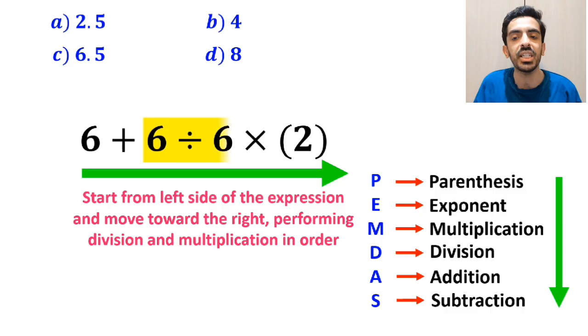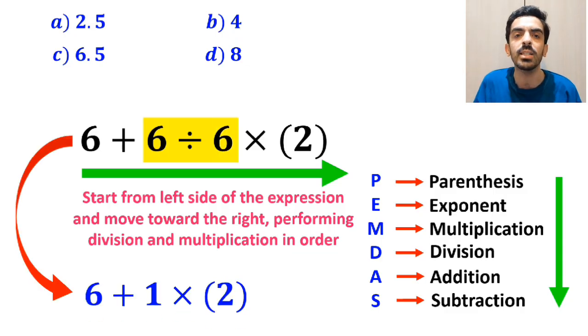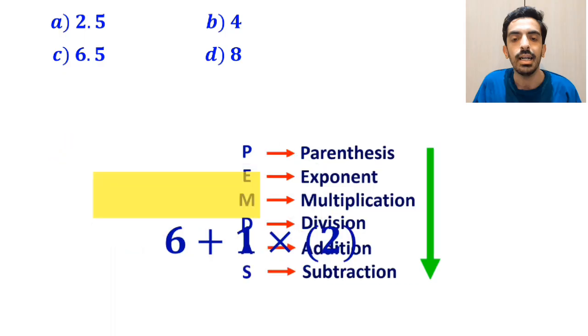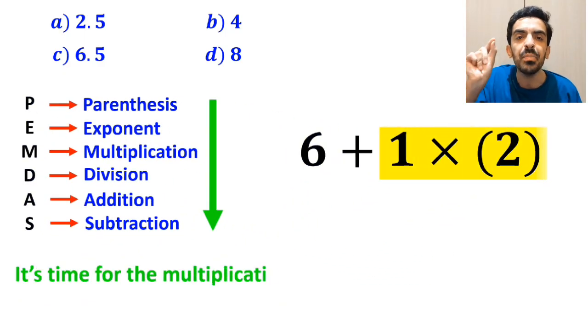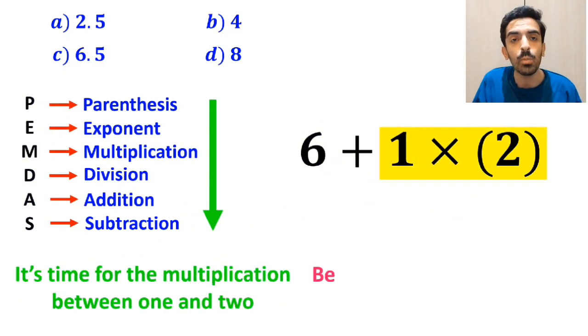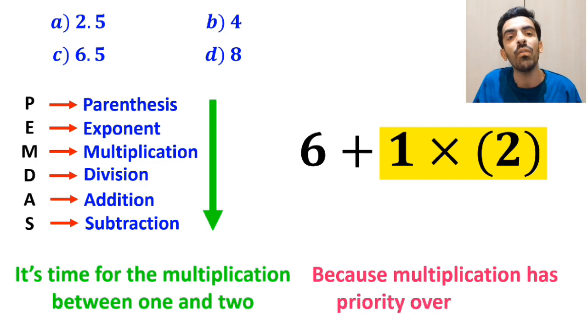So first, we perform the division between the two sixes, which simplifies this expression to 6 plus 1 times 2. In the next step, it's time for the multiplication between 1 and 2, because multiplication has priority over addition.